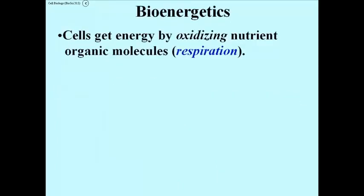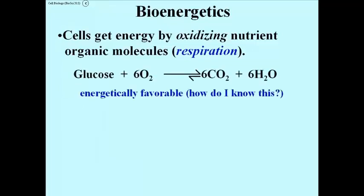Cells get energy by oxidizing nutrient organic molecules. Respiration can be summarized for most organisms as the combustion of glucose, and here's the equation: Glucose plus oxygen become CO2 and water. This reaction is energetically favorable, meaning it releases nutrient energy that the cell can use. How do I know this? The equilibrium arrows are unequal, and the long arrow points towards product. Energetically favorable reactions produce more product than reactant at equilibrium.